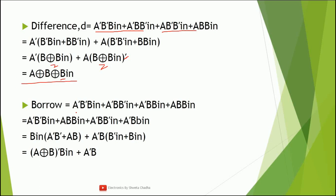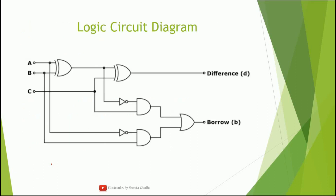Similarly for borrow, I will write down the borrow statement by shuffling the terms — taking the first and last terms together and the middle two on the side. From the first two terms take B_in common: you get B_in·(A XNOR B). From the last two terms take A̅·B common: A̅·B·(B_in + B̅_in) = A̅·B, since B_in + B̅_in equals one by Boolean algebra. The final expression for borrow is (A XNOR B)·B_in + A̅·B.